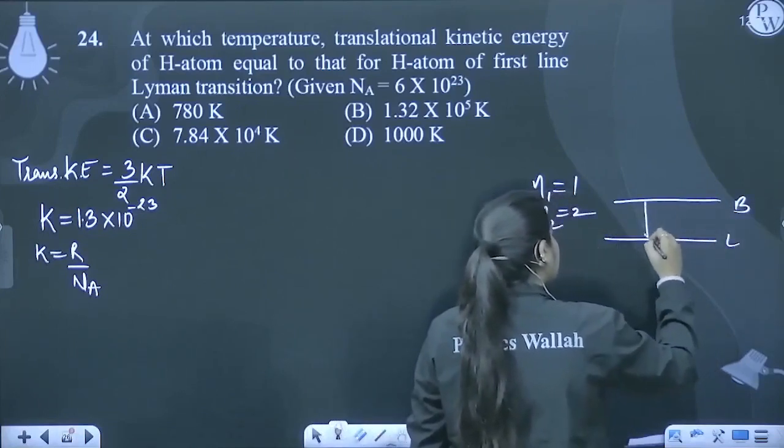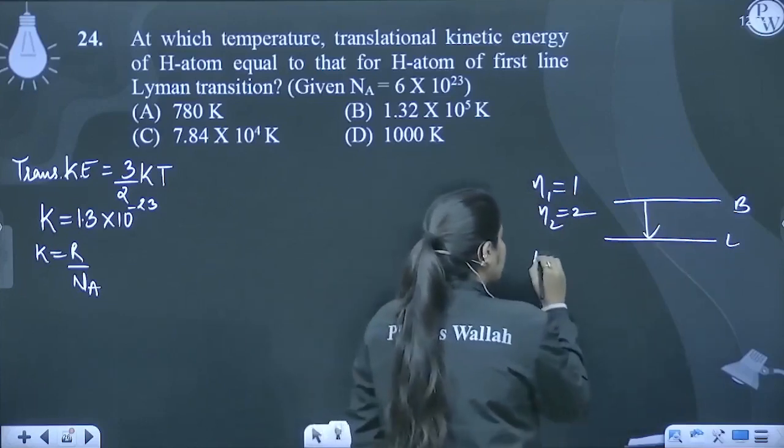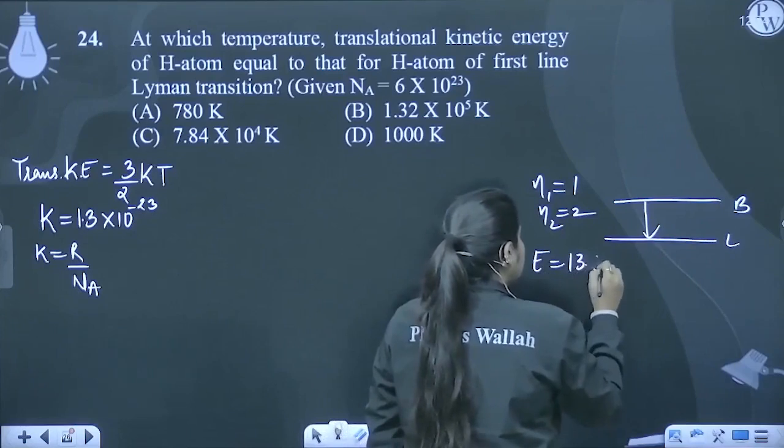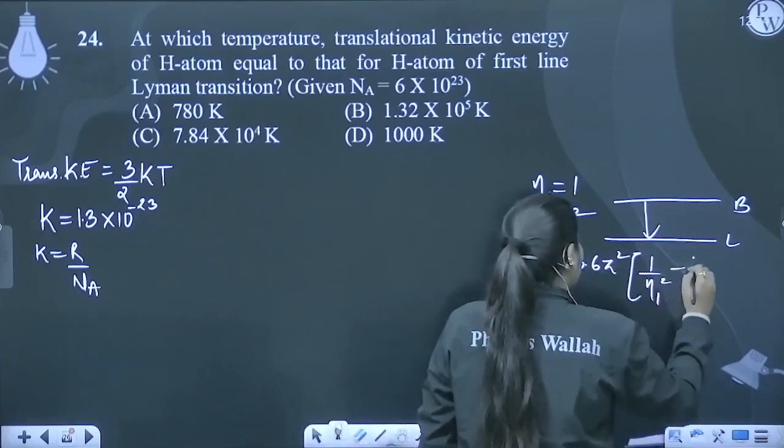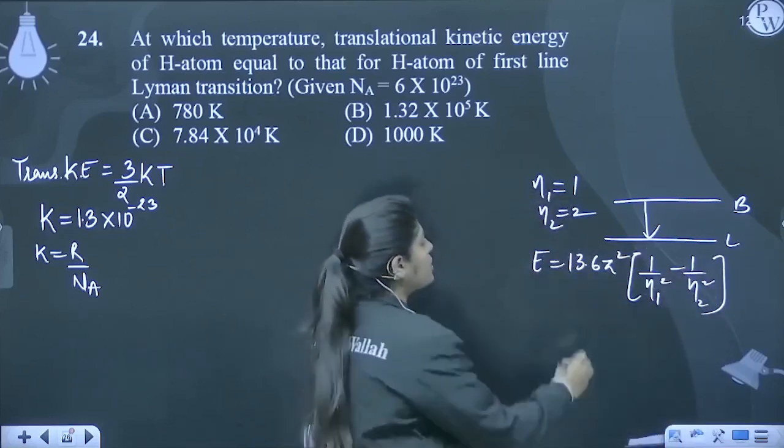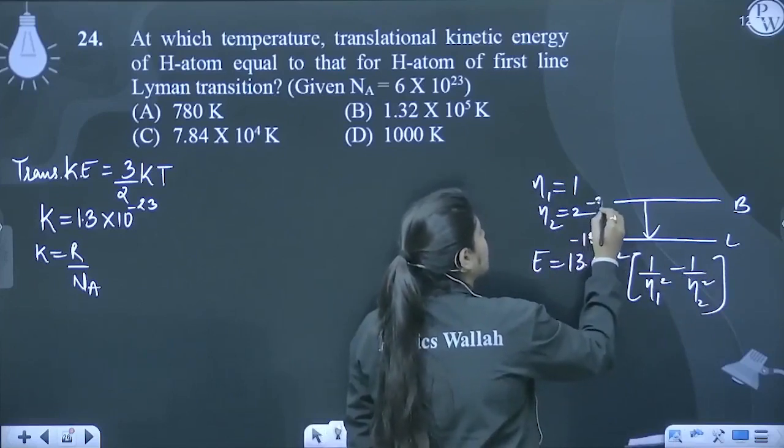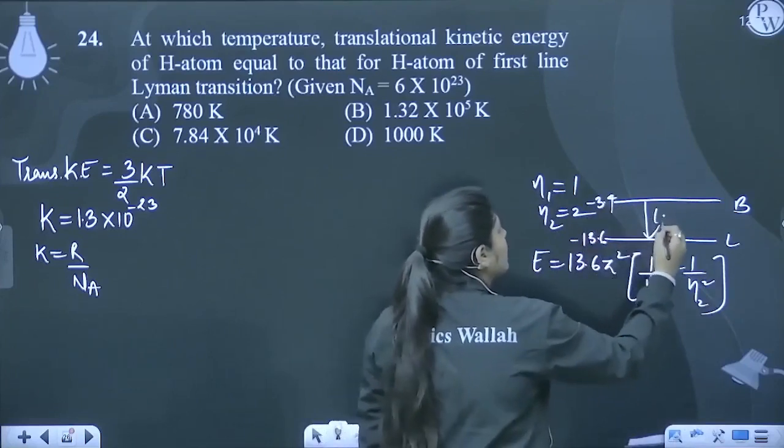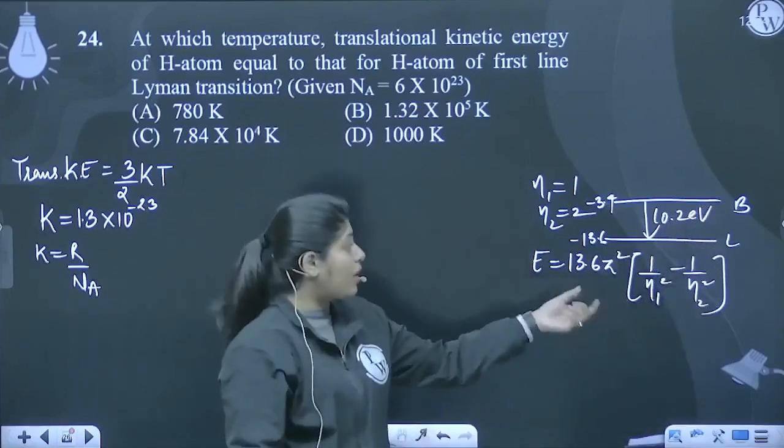First line of Lyman transition, 2 to 1. So 2 to 1 will be how much energy will be? 13.6, Z square, 1 upon N1 square minus 1 upon N2 square. Now, the first line is minus 13.6 and the second line is minus 3.4. The difference will be 10.2 eV. So I don't need to write the formula because I already know the values.